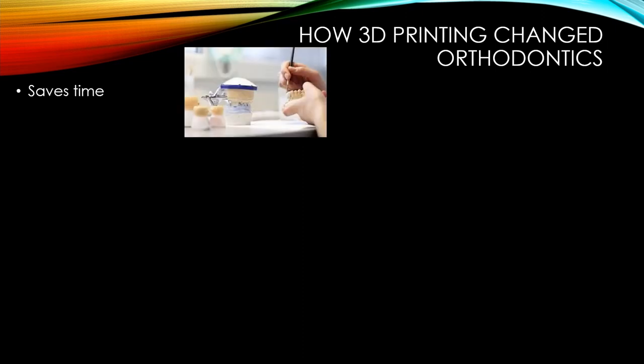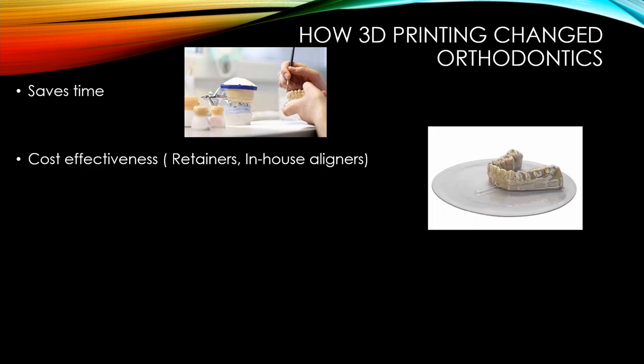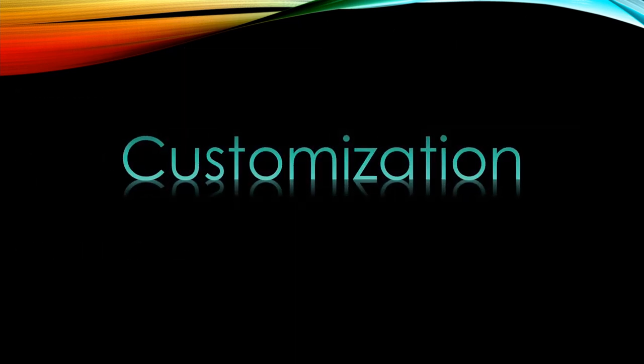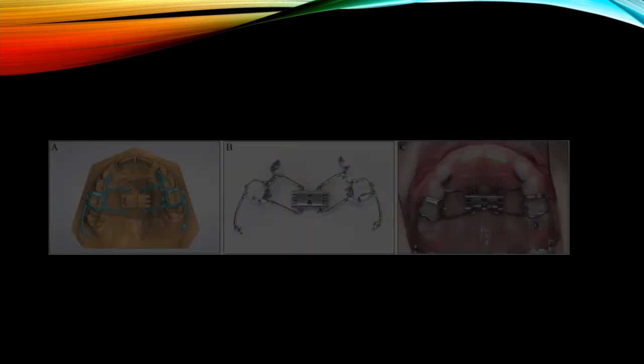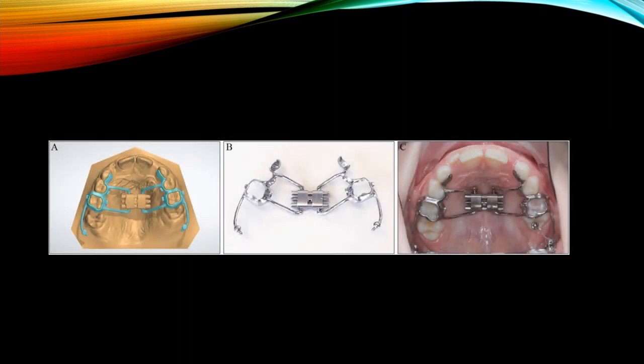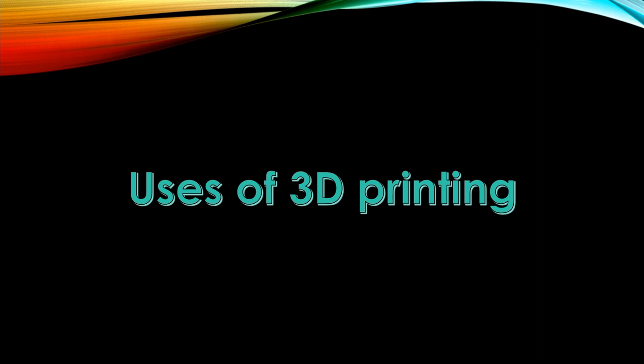There is no doubt that 3D printing has changed how we practice orthodontics. It saves time since we don't have to send everything to the lab; we can create our own retainers and in-house aligners, making it very cost-effective in the long term. We can 3D print our own appliances even with totally new designs. But the greatest strength of 3D printing, in my opinion, is customization — this is where it really shines.